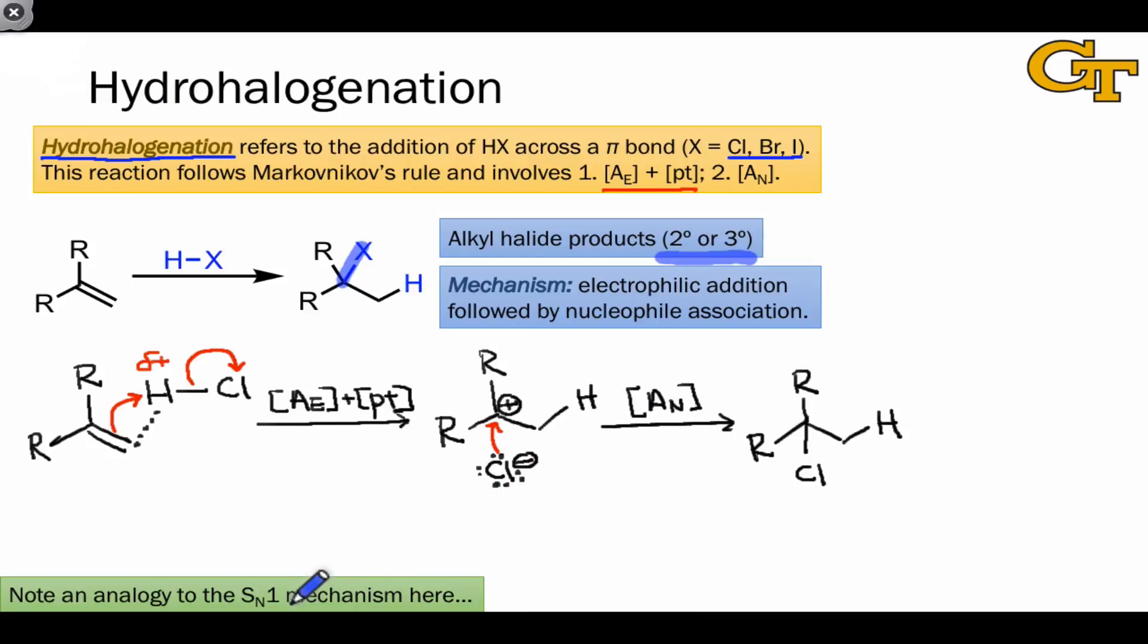Notice here that we can draw an interesting analogy to the SN1 mechanism. If we ignore what's happening in the first stage of this mechanism, the second stage is exactly like the second step of SN1, coordination of a nucleophile to a carbocation. The two mechanisms differ only in how the carbocation is generated. In the SN1 mechanism, the carbocation comes not from A sub E plus proton transfer, but from D sub N, departure of a leaving group, say iodide, from the electrophilic carbon. Both mechanisms are related in the sense that the stability of this carbocation intermediate is key to determining the course of the first step.